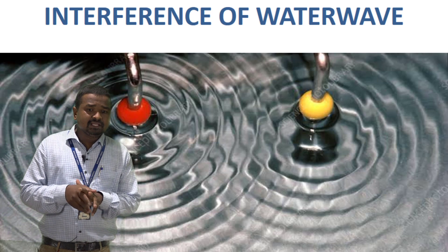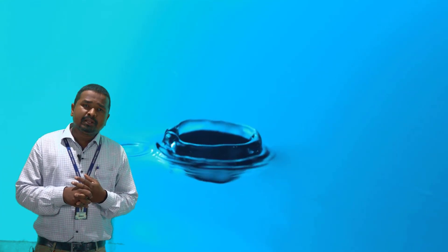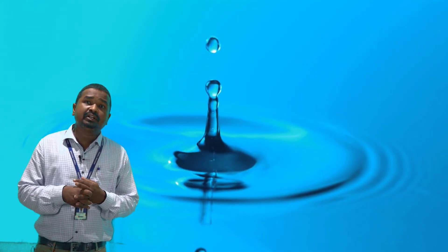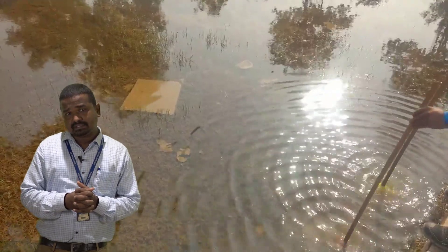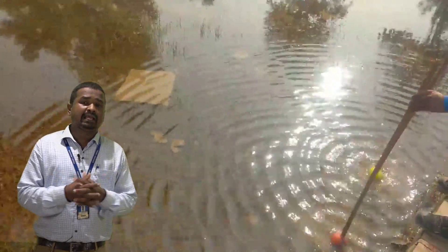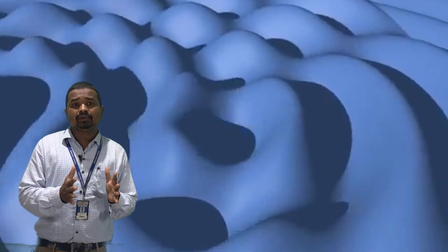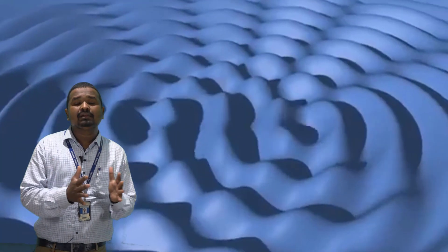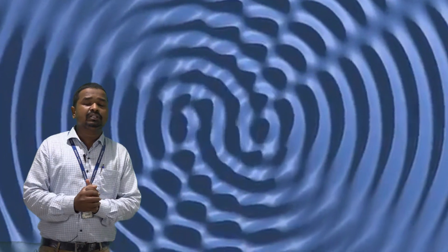The next example is interference of water waves. Water waves are formed after a disturbance is created on the water surface. If we tap the water surface at two different points at the same time, every point generates waves that travel outward. Some portions of these waves traveling toward each other will mix and produce a combined wave pattern — that is nothing but interference.